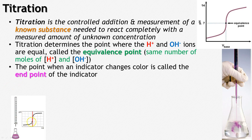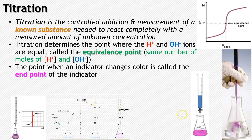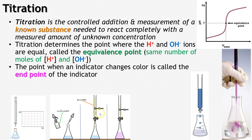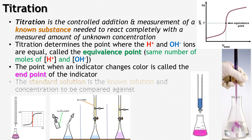The point at which the indicator actually changes color is called the endpoint of the indicator. You add different amounts of solution and it changes from one color to a different color when you reach the endpoint. You add the indicator, use your burette to add different volumes of liquid, and wait for that color change. The point at which it changes tells you how much you added, and now you can figure out the unknown concentration.